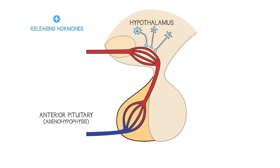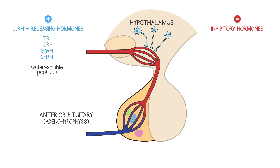In the anterior pituitary gland, the releasing hormones work on special populations of anterior pituitary cells, each population of which produces a different hormone in response. It's helpful to remember that any hormone whose initials end in RH — such as TRH, CRH, GnRH, and GHRH — will be a releasing hormone from the hypothalamus. RH stands for releasing hormone, and these are all water-soluble peptide hormones. Less conveniently, the hypothalamus also releases inhibitory hormones, and they have different names and not all of them are peptides — but we won't dwell on the inhibitory hormones here.